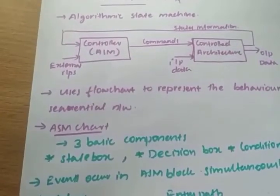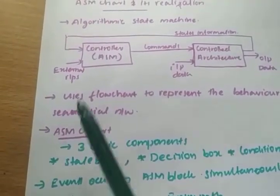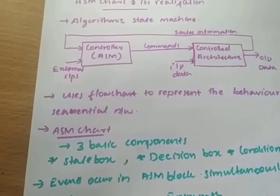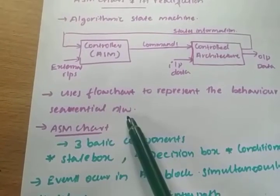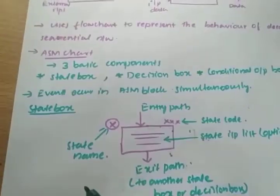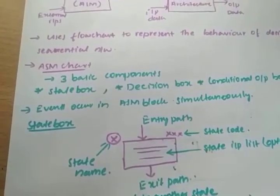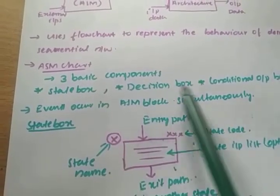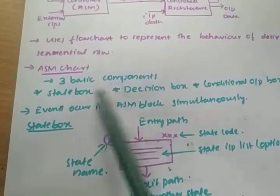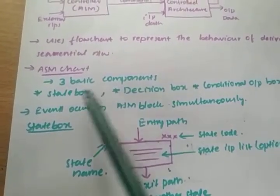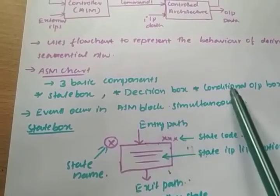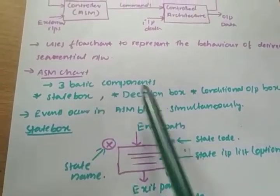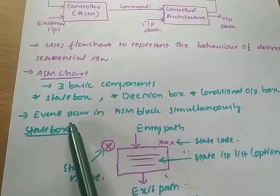The ASM chart uses a flowchart to represent the behavior of a desired sequential network. An ASM chart actually has three components: the first one is the state box, the second is the decision box, and the third is the conditional output box. These are the three important basic components of an ASM chart.